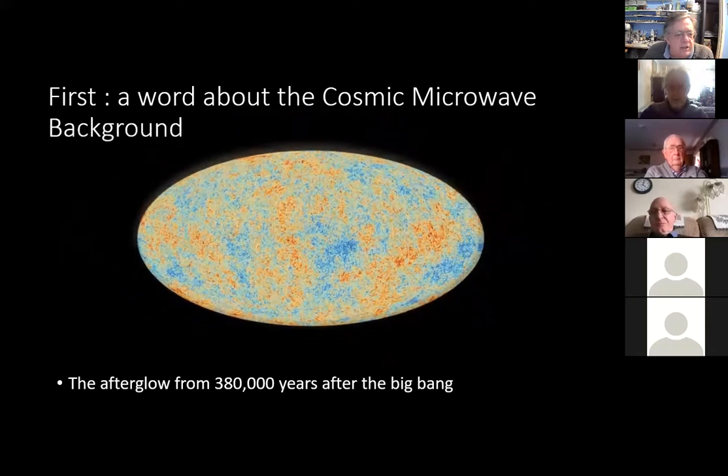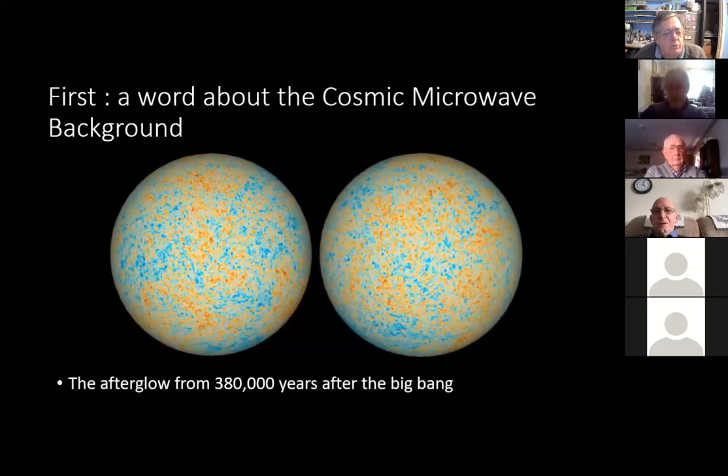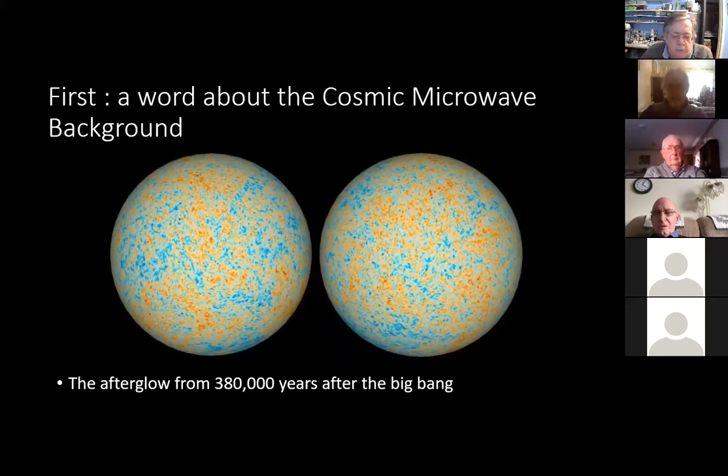We always see it as that rugby ball shape because what they've really done is unwrapped the two hemispheres of a sphere. Another way of showing the same is as two circles. That rugby ball shape is the equivalent of what they do when they take a globe of the earth and map all the continents out and unwrap it onto a flat sheet.